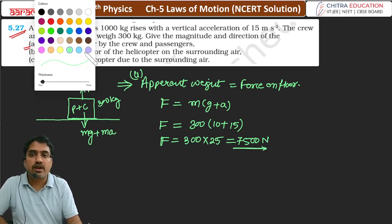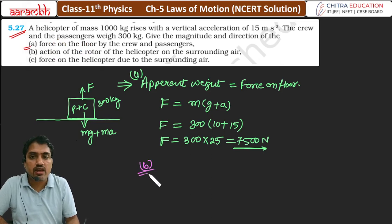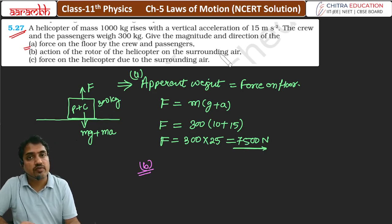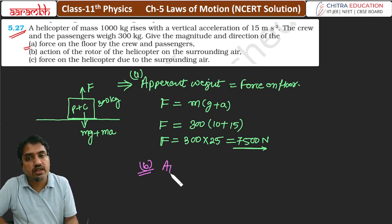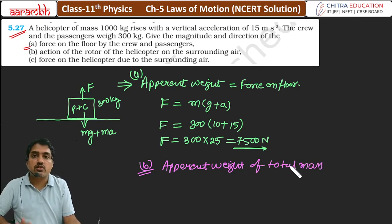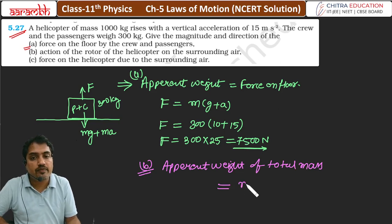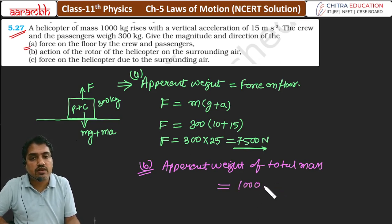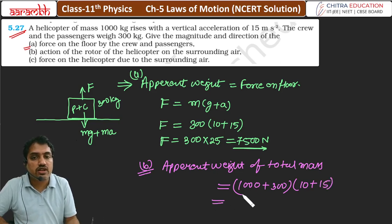Ab hum second part dekhte hain — B wala part. B wala part keh raha hai: the action of the rotor of the helicopter on the surrounding air. Toh yahan par apparent weight ki baat karenge, par yahan par complete mass lena padega — total mass, matlab passenger, crew and helicopter. Toh woh ho jayega M1 plus M2. Total: helicopter 1000 plus 300, into g ka value 10, aur acceleration 15.